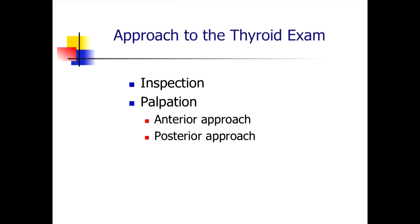The technique uses the classical approaches, as you would use for the abdomen. You inspect visually. You palpate, and there are two approaches to palpating. One is the anterior approach, where you're standing in front of the patient. And then the other is the posterior approach, where you're coming from behind, putting your hands around and feeling the landmarks of the thyroid with your fingers from behind the patient.